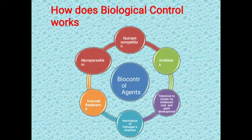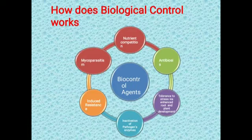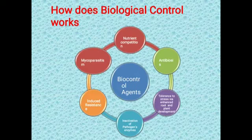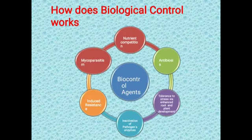Next is mycoparasitism. 'Myco' means fungus, and 'parasitism' means dependence. Mycoparasitism means when one fungus completely depends on another fungus. For example, Trichoderma viride is a fungus that completely depends on other fungi — like Fusarium, Rhizoctonia, and Pythium — for its food material. This is called mycoparasitism. This concludes the mechanisms of biological control agents.